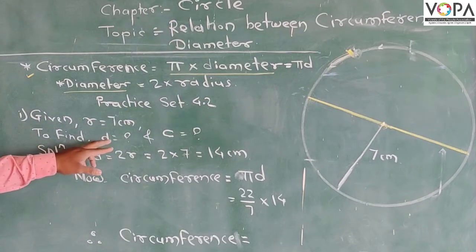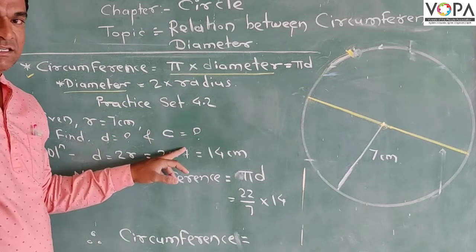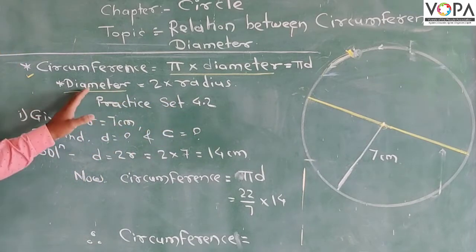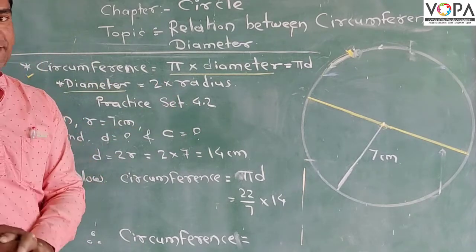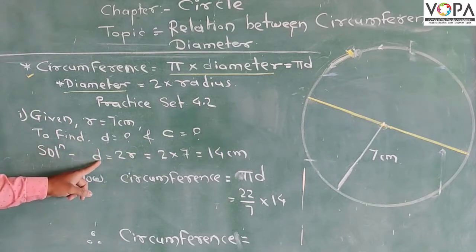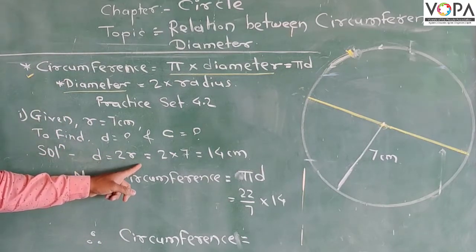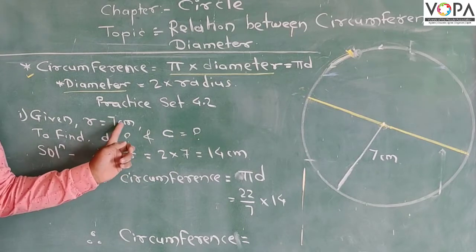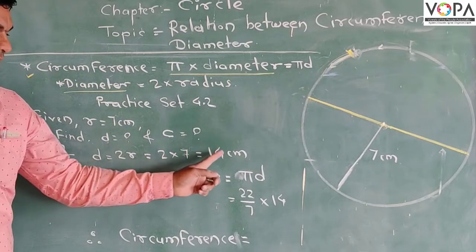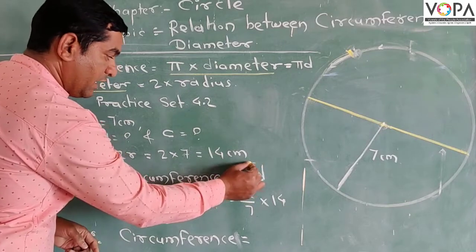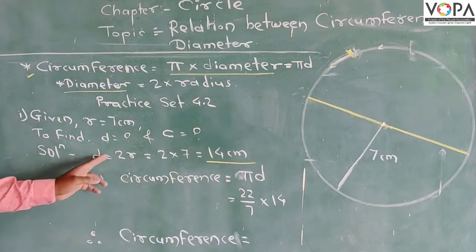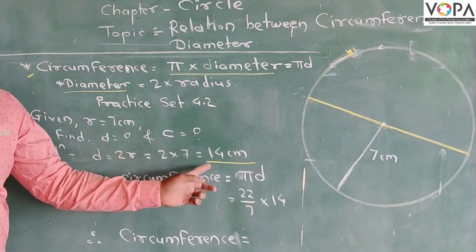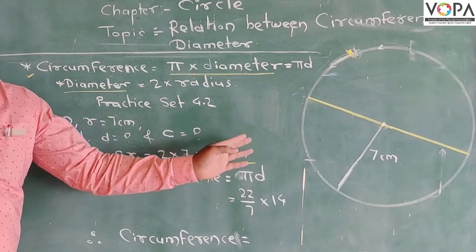To find the diameter, we use the formula: diameter equals 2R, which means 2 into the radius. What is the radius? 7. So 2 into 7 equals 14 centimeters. Therefore, diameter equals 14 centimeters.